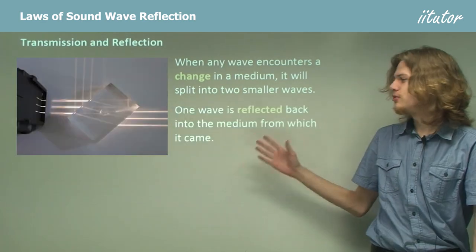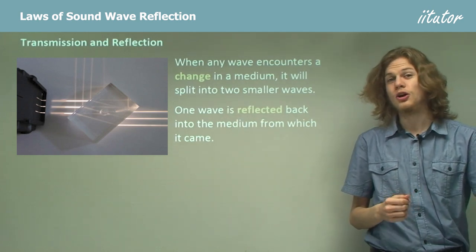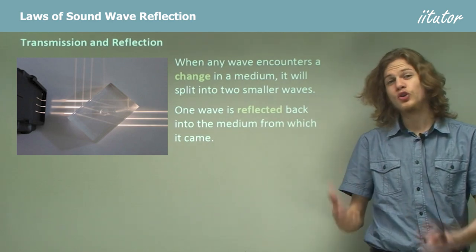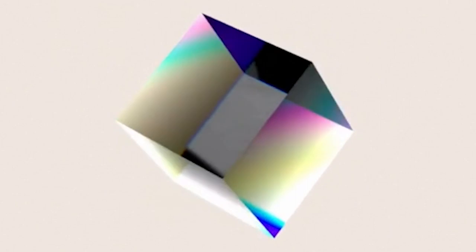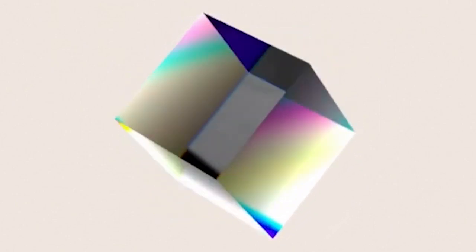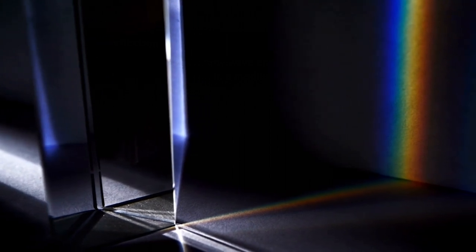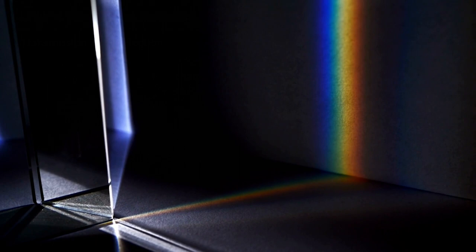One wave is reflected back into the same medium. We can see that these little beams of light in the photograph, which are of course a type of wave, come in from the left, and some of them get reflected to the top of the image because they stay in the same medium, air. But the other part is transmitted through the prism, and we can see that some light comes out of the right of the picture. If we take the total amount of energy in the reflected wave and the transmitted wave, it adds up to the same amount we started with — no energy is created or destroyed.